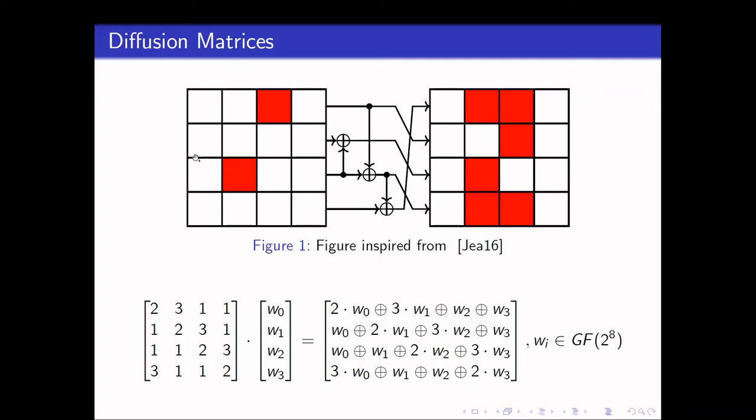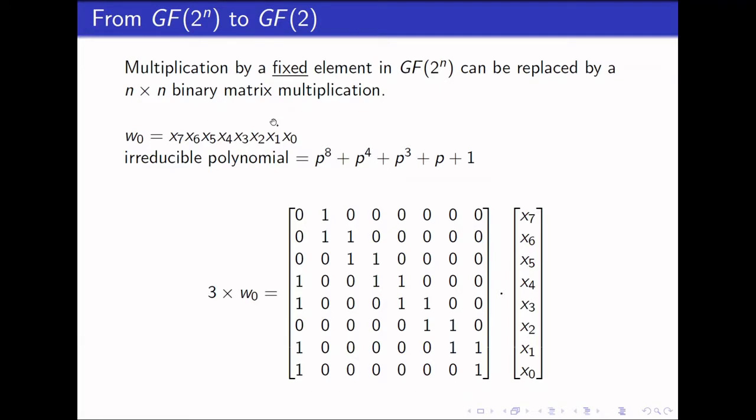Usually, this matrix multiplication takes place in the word size of the cipher. Therefore, the more common ones are in GF2 to the power of 4 or GF2 to the power of 8. In order to discuss the number of XOR gates required, we will first convert this into a binary matrix multiplication. As it turns out, multiplying by a fixed element in GF2 to the power of N can be replaced by an M by M binary matrix multiplication. For example, the element 3 in GF2 to the power of 8 can be written as this 8 by 8 binary matrix with the help of the irreducible polynomial.